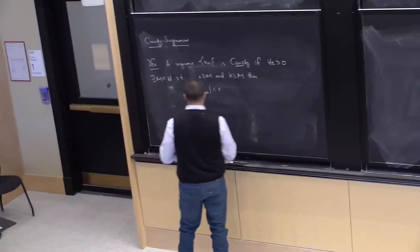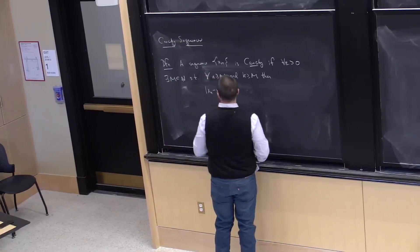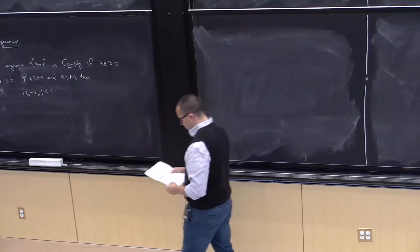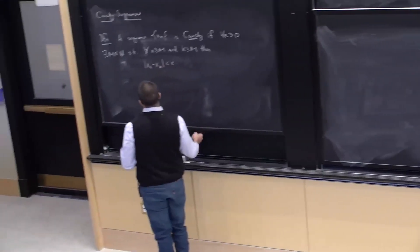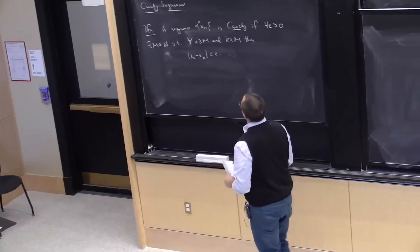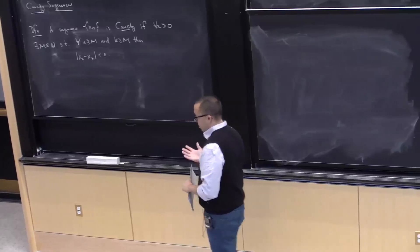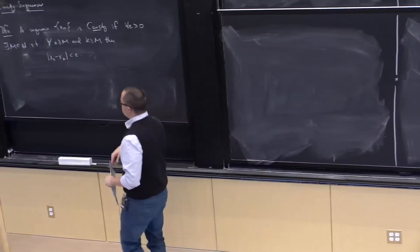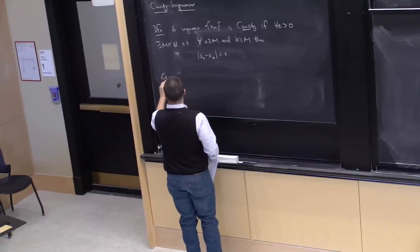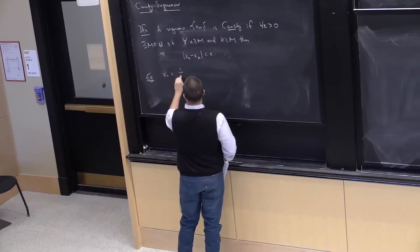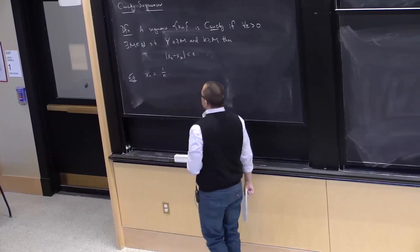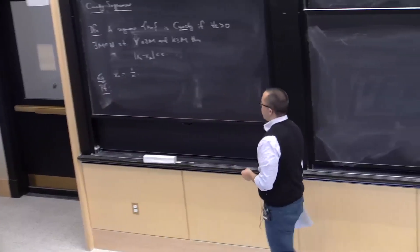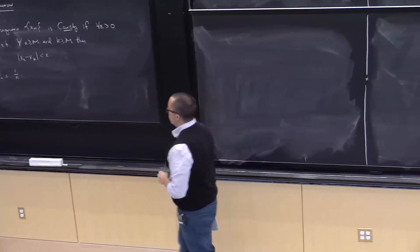Let me rewrite the definition in a slightly cleaner form. You have a definition of a new thing, so you should look at an example and then negate the definition to see if you understand it. An example of a Cauchy sequence is x_n = 1/n, our favorite sequence. To prove this, we verify that x_n = 1/n satisfies the definition of being Cauchy.